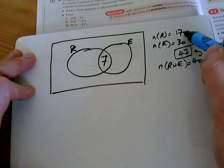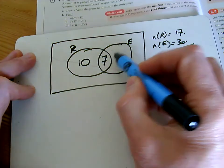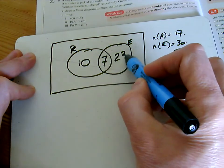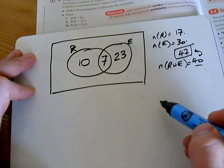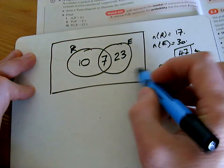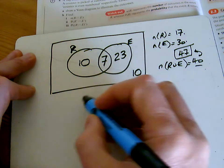Well, there were 17 in total there, so I'll put the 10 there. And there were 30 in total there, so I'll put the 23 there. And if you now check that, you'll see that that adds up to the 40 we wanted. So there's 40 there, and then there's another 10 around the outside because there was a grand total of 50 altogether.